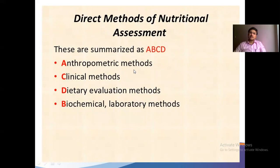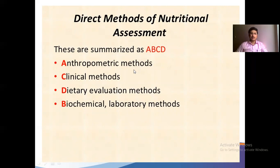Assessment is very important and follows the ABCD formula. First, anthropometric measurement — your height, weight, body mass index, is it in normal range? Then waist-hip ratio and skin-fold thickness. Next, clinical methods: signs and symptoms that doctors look for — color of hair, eyes, edema — these are externally visible clinical indicators.